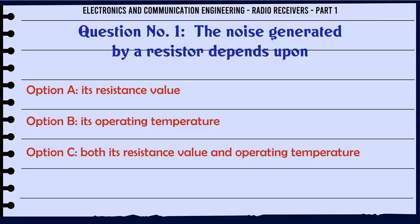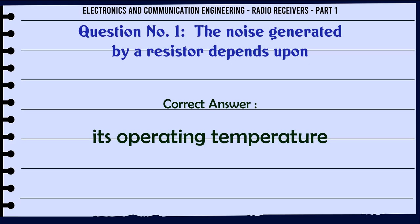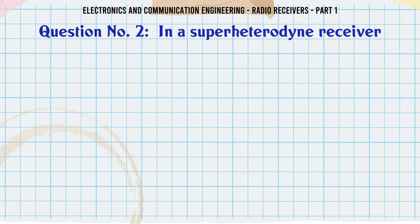The noise generated by a resistor depends upon: a. Its resistance value. b. Its operating temperature. c. Both its resistance value and operating temperature. d. None of the above. The correct answer is its operating temperature.